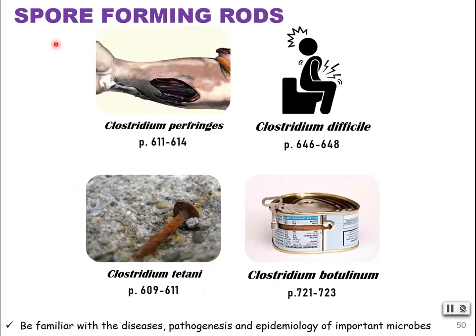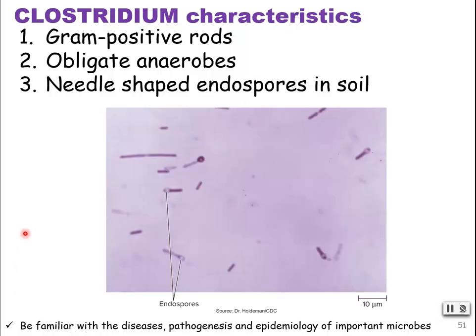Our next genus is Clostridium, and we're going to look at four: Clostridium perfringens, Clostridium difficile, Clostridium tetani, and Clostridium botulinum. These are spore formers — naturally occurring in the environment. They form a spore which is very resistant to desiccation and harsh conditions: drying out, heat, cold — it's a survival structure.